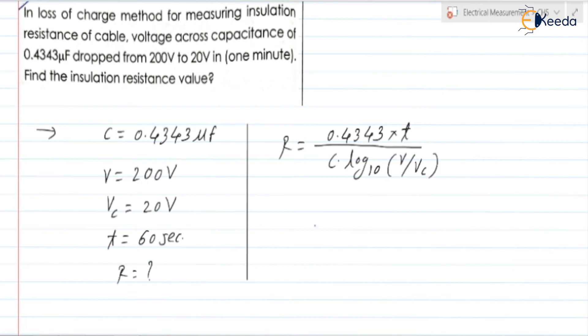So if you check it is equal to 0.4343 into 0.4343 into t that is 60 seconds divided by C 0.4343 into 10 to the power minus 6 into log to the base 10 of V by Vc. What is V? It is 200 and Vc is 20.